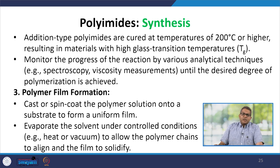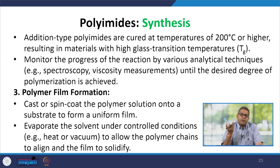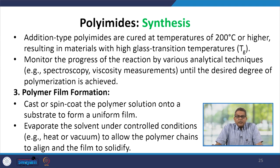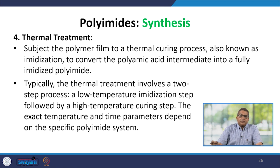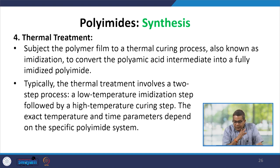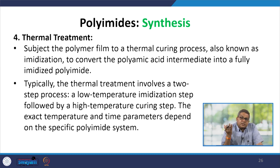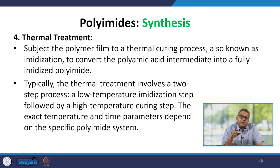For polymer film formation, the polymer solution is cast or spin-coated onto a substrate to form a uniform film, and the solvent is evaporated under controlled conditions — using heat or vacuum — allowing polymer chains to align and the film to solidify. The film is then subjected to a thermal curing process, also known as imidization, to convert the polyamic acid intermediate into fully imidized polyimide. This typically involves a two-step process: a low-temperature imidization step followed by a high-temperature curing step.